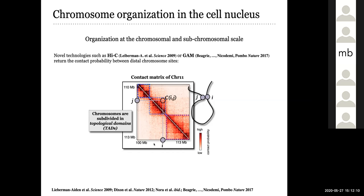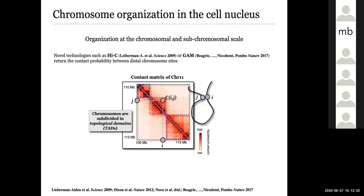Here is an example: this is a small region on chromosome 11, about 3 million bases. The content of this contact matrix is the following: given two sites I and J along the chromosome, this matrix gives you the probability of contact between sites I and J — how frequently they are interacting with each other. Dark color means they are highly interacting; light color means they are not interacting much. The pattern that emerges is a non-trivial and complex organization also at the level of the chromosome.